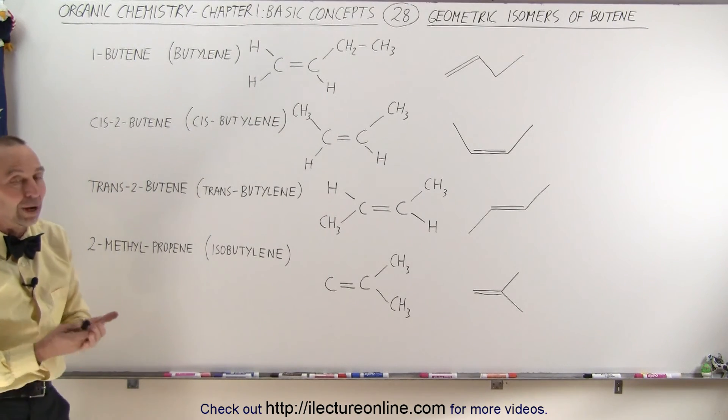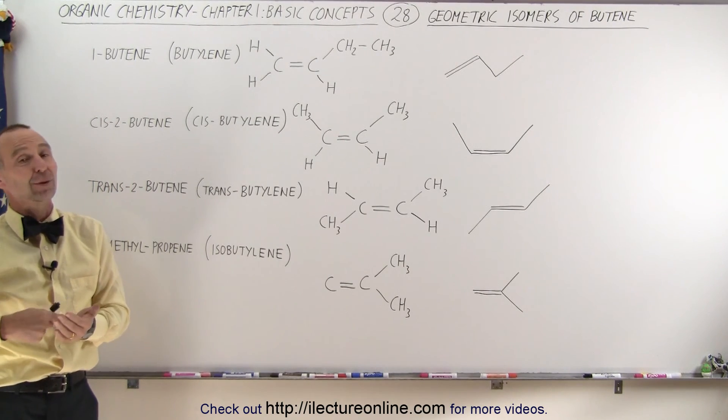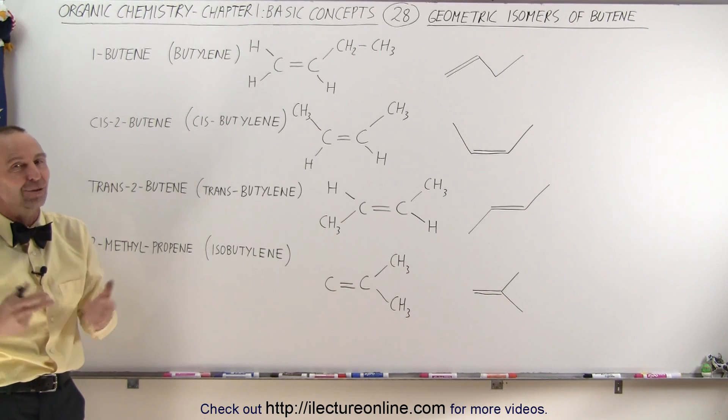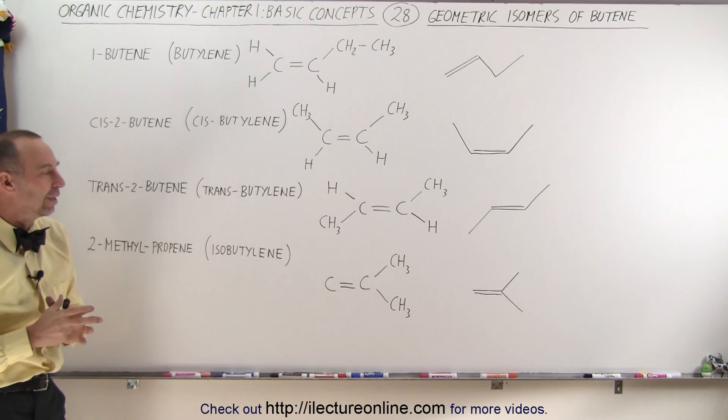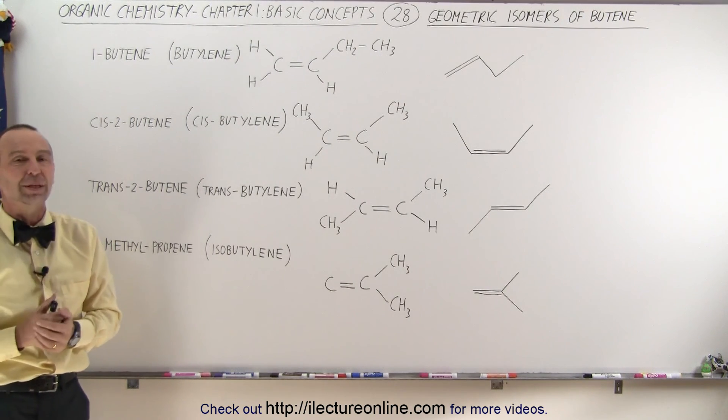So now we're familiar with the four isomers of butene. As we go to pentene and hexene, you'll see that it gets quite complicated quite quickly. And those will be on the next videos.